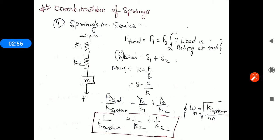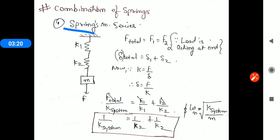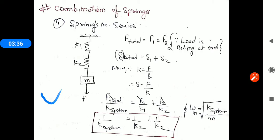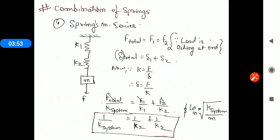In a spring-mass system, we get to see many combinations of springs. Here we are showing springs in series. There are two springs, K1 and K2. When a force F is applied at the end, the concept is that F_total equals F1 equals F2, since the load acts at the end. The total deflection is delta1 plus delta2. Since K equals F upon delta, and delta equals F upon K, we compute delta_total as F_total upon K_system. The overall stiffness formula for series is: 1/K_system = 1/K1 + 1/K2.